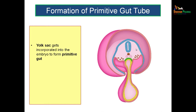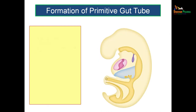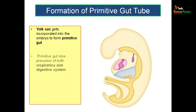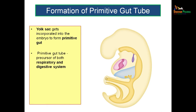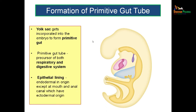We have a large amniotic cavity in the upper part and a small yolk sac cavity in the lower part. As the amniotic cavity enlarges, it will take off some of the yolk sac into the embryonic disc, and this part of the yolk sac which is getting incorporated into the embryonic disc is called the primitive gut. So the formation of the primitive gut is by the absorption of a part of the yolk sac into the embryonic disc. The primitive gut is giving rise to the gut tubes as well as the respiratory system, so the primitive gut is a precursor of both the respiratory and digestive system. The epithelial lining of the gut is actually endodermal in origin because the yolk sac has an endodermal lining.